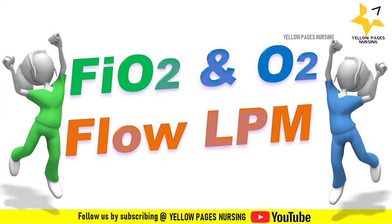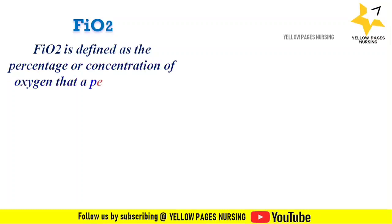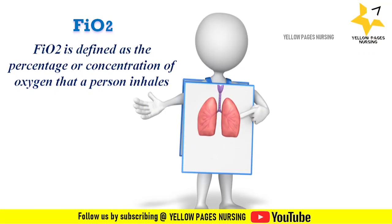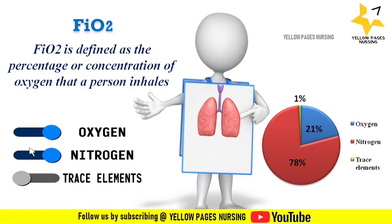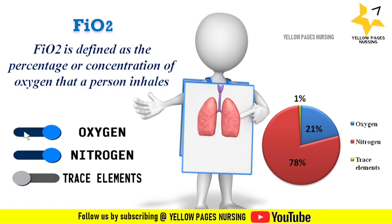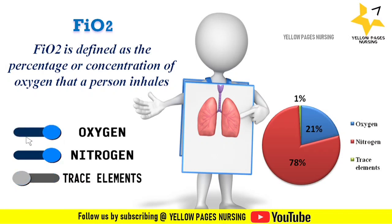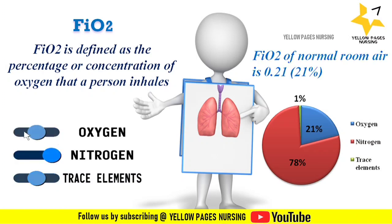What is FiO2? FiO2 is defined as the percentage or concentration of oxygen that a person inhales. The air we inhale on a day-to-day basis is made up of 21% oxygen, 78% nitrogen, and 1% trace elements such as argon, carbon dioxide, neon, helium, and methane. FiO2 is expressed in decimal — for example, 30% oxygen equals an FiO2 of 0.30. FiO2 of normal room air is 0.21, or 21%.